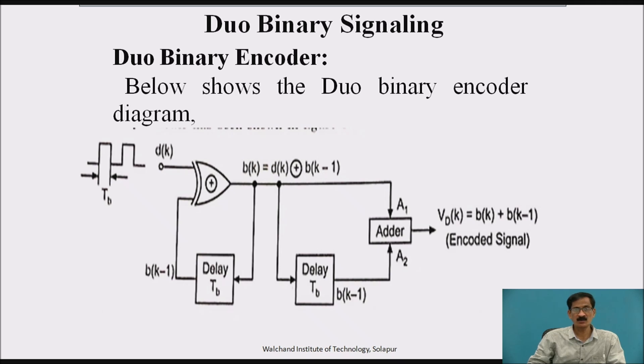Output b k is given to adder circuit as A1. This adder circuit will have another input as A2 which is the delayed version of b k that is b k minus 1. And hence finally the encoded signal is given by v d k equals b k plus b k minus 1.